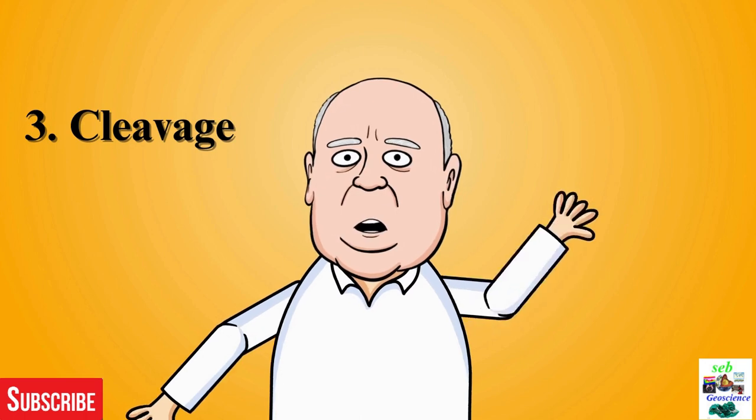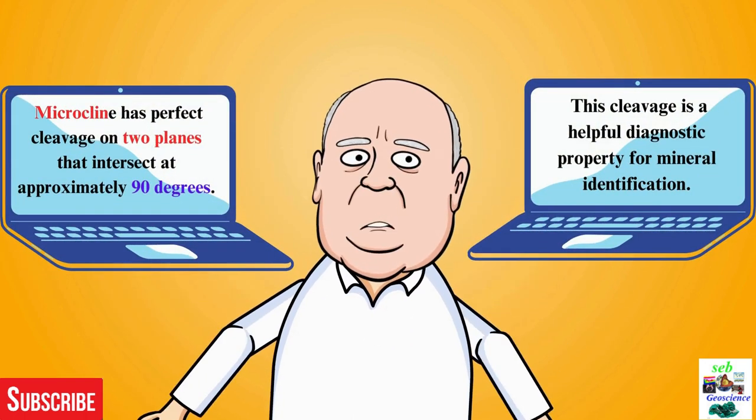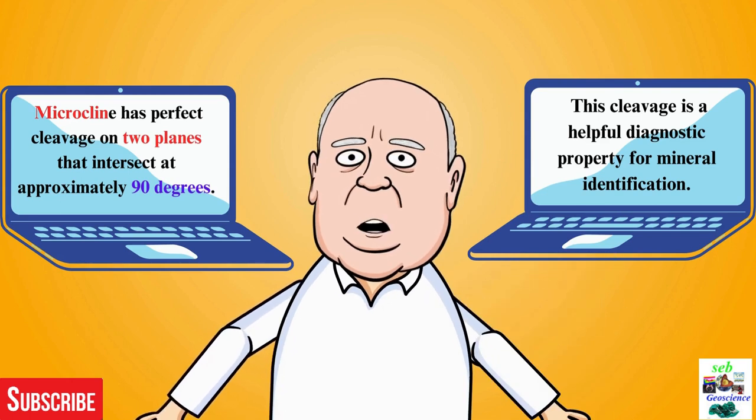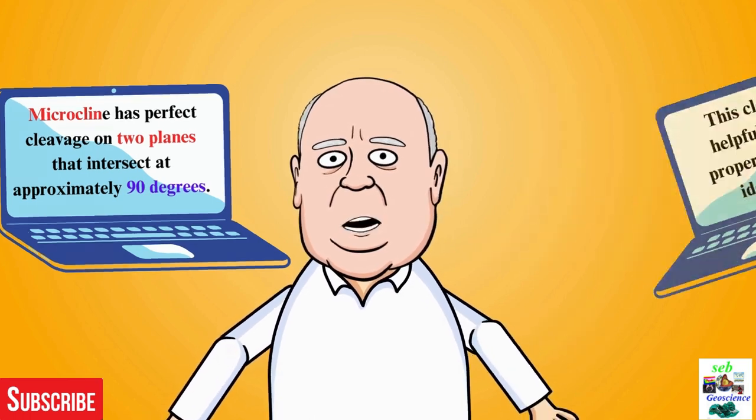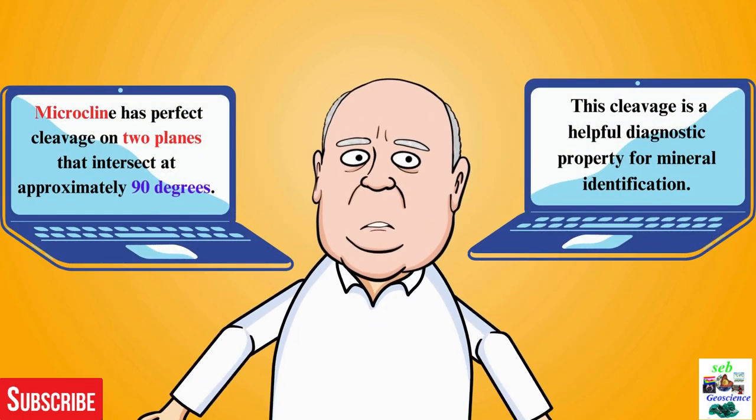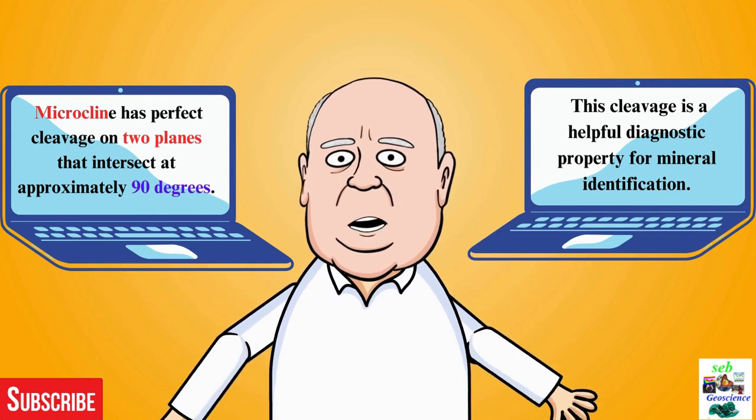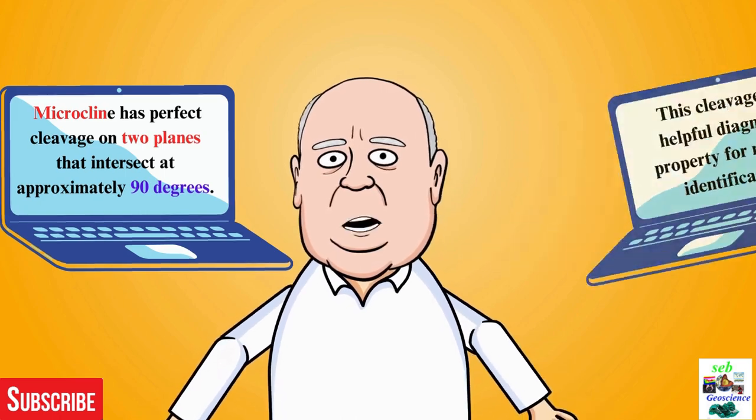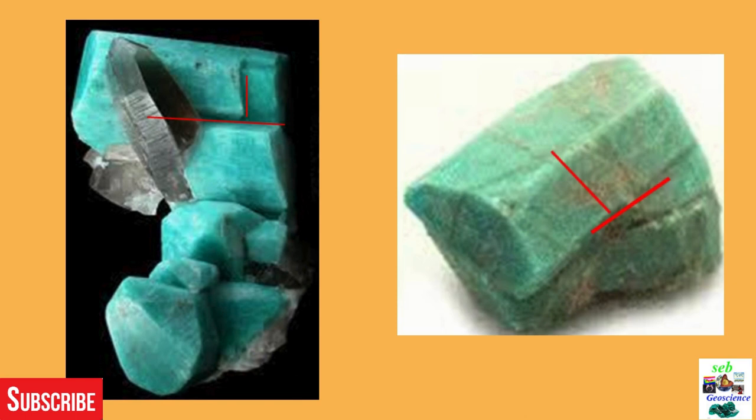Cleavage, one of the physical properties of microcline. Microcline has perfect cleavage on two planes that intersect at approximately 90 degrees. This cleavage is a helpful diagnostic property for mineral identification. Microcline has two sets of cleavage that cross each other at 90 degrees. Here is 90 degrees cross each other. This is a good example for cleavage of microcline.